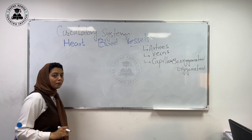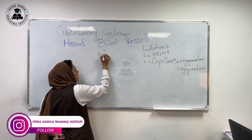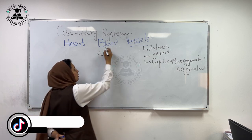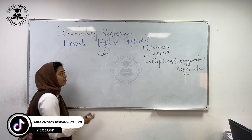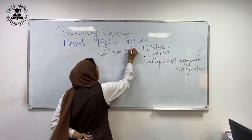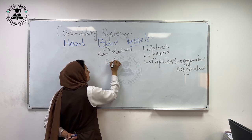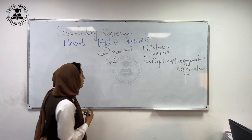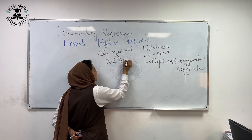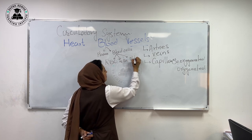Now let's talk about blood. Blood consists of a liquid portion called plasma. Besides plasma, blood cells are of three types: RBC — red blood cells, also called erythrocytes; white blood cells; and the third type is platelets.